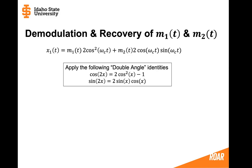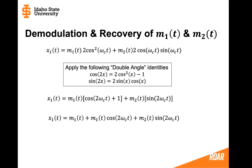By applying the double angle identities we will arrive at this equation. Then distributing message 1 throughout we will arrive at this and as we can see we have a signal X1